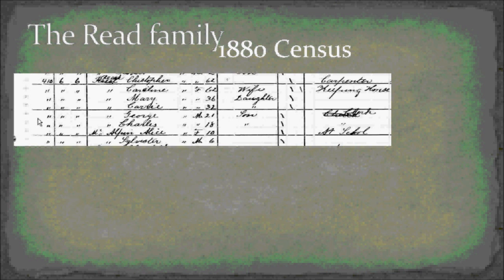I wanted to learn more about the Reed family, so I started pulling up census records. In my father-in-law's notes, he had the fact that William married Margaret Reed, and that her parents were Christopher and Caroline. He knew a brother named Frank, and also had a Mary Reed in his notes — she married a gentleman named John Payson Soule. So Mary Soule is Mary Reed married to John Soule. Going through the census records, I find the Reed family — Christopher and Caroline, their kids: Mary, Harry, George, and Charles.